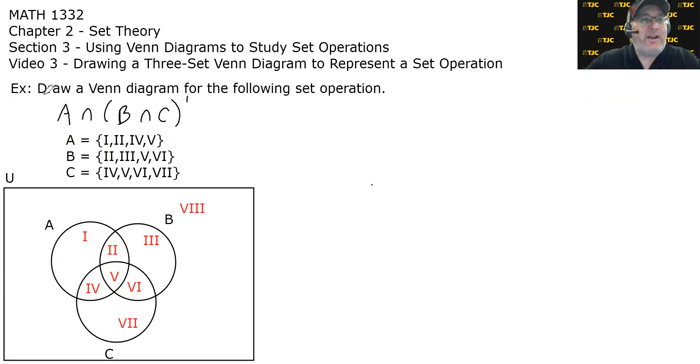Alright, so we got a couple examples I want to go through. First one is to draw a Venn diagram for the set A intersect open parentheses B intersect C close parentheses complement, or in better English, A intersect the complement of B intersect C. We're going to attack it just like we did before.